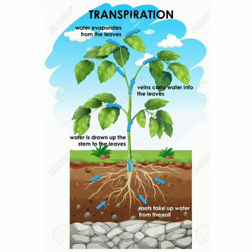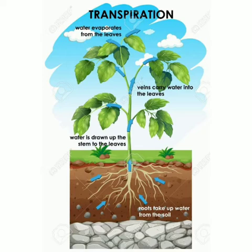This is clear, and this happens through the stomatal opening. If you want to know whether transpiration takes place in a leaf or in a plant, what we have to do is take two transparent polythene bags, and also take a herb — maybe even pudina leaf or coriander leaf.